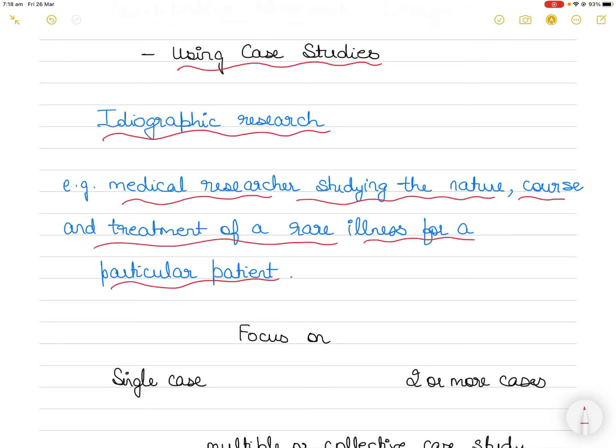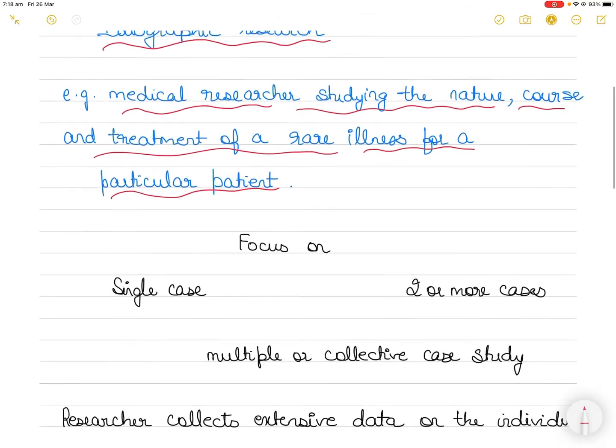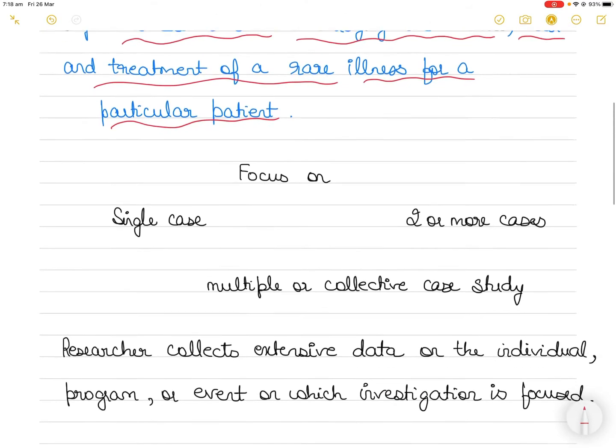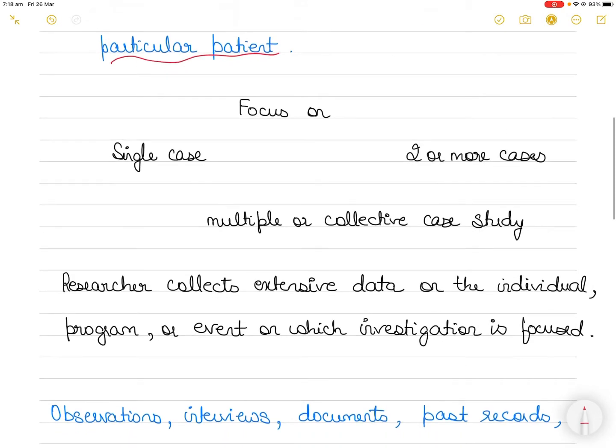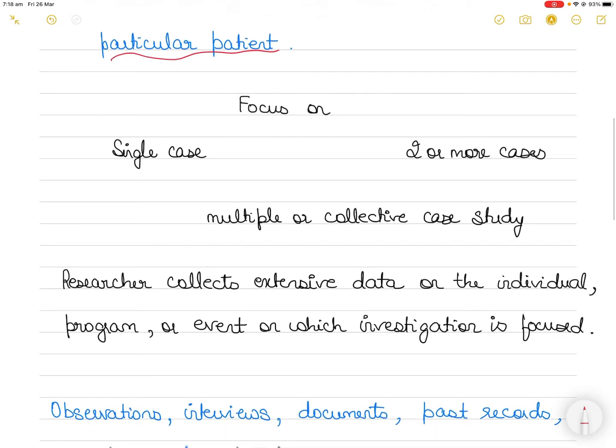A political scientist might study the origins and development of a politician's campaign as he or she runs for public office. Case studies are common not only in medicine, education, and political science, but also in law, psychology, sociology, and anthropology.